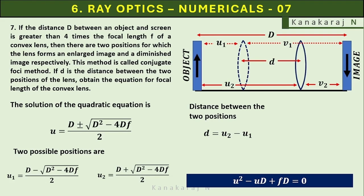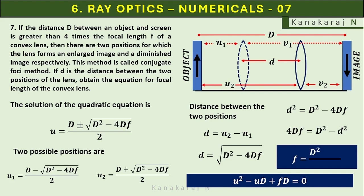We get two times D square minus 4Df upon 2. So two again cancels. We get d equals root of capital D square minus 4 capital Df. On squaring both sides we get d square equals D square minus 4Df. Rearranging and finding f equals D square minus d square upon 4D is the answer.